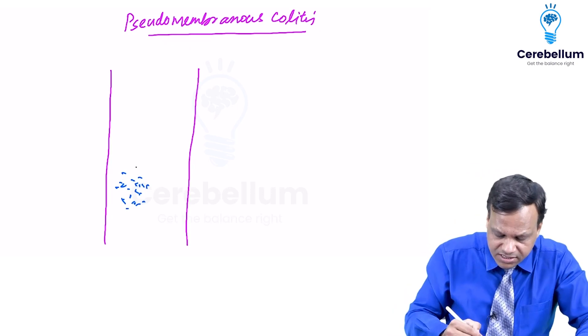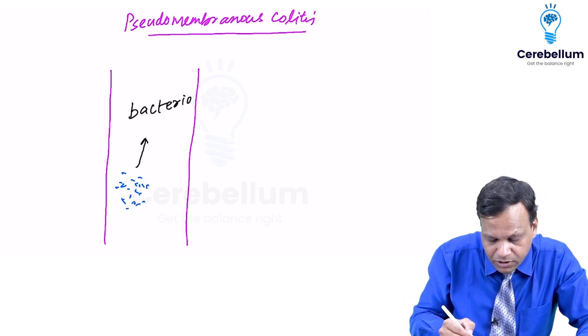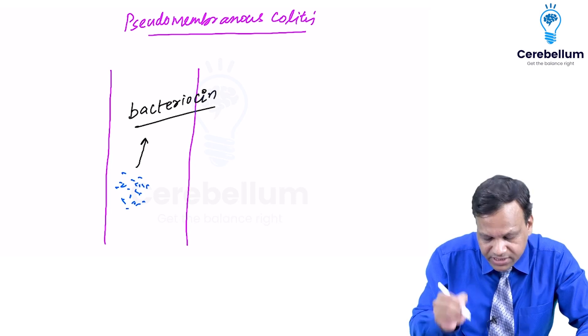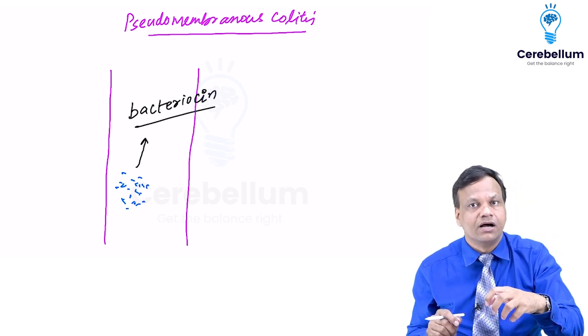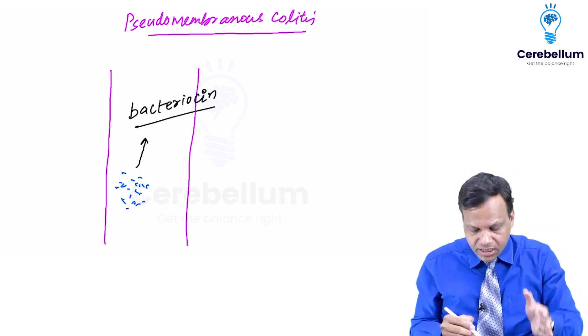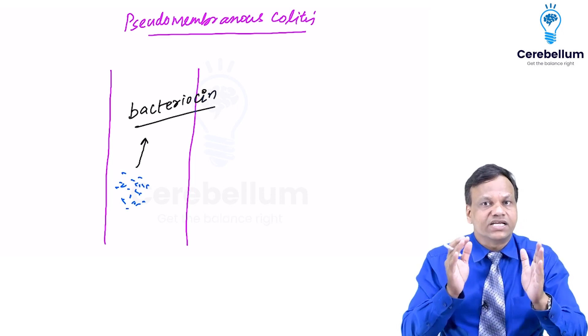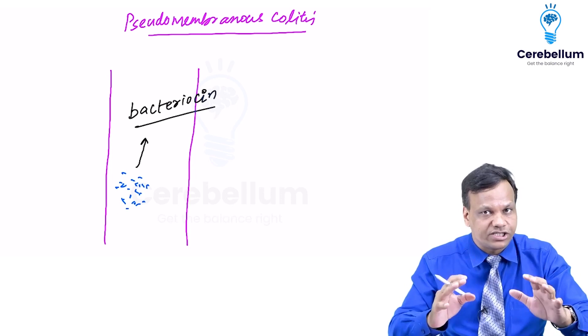Second thing is that these release a substance called bacteriocin. So remember bacteriocin is a substance produced by the commensal bacteria which kill the pathogenic bacteria. So in simple language till the time we have these commensal bacteria are GIT safe. Pathogenic bacteria cannot cause infection.